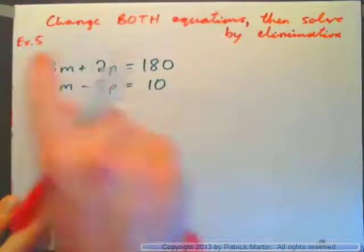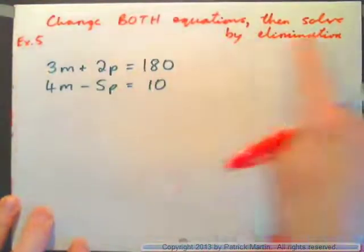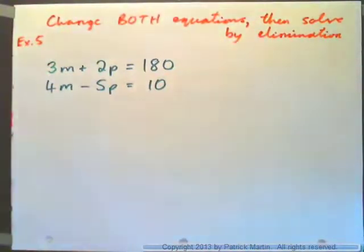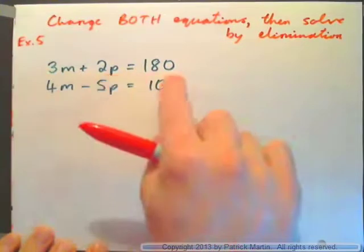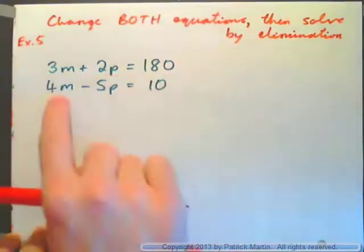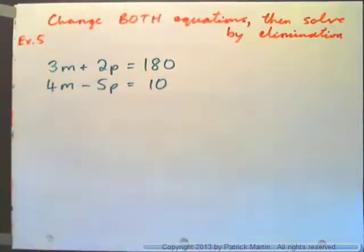Example 5. In this example we need to change both equations and then solve by elimination. Let's imagine that 3 markers plus 2 pens cost 180 cents and 4 markers minus 5 pens cost 10 cents.